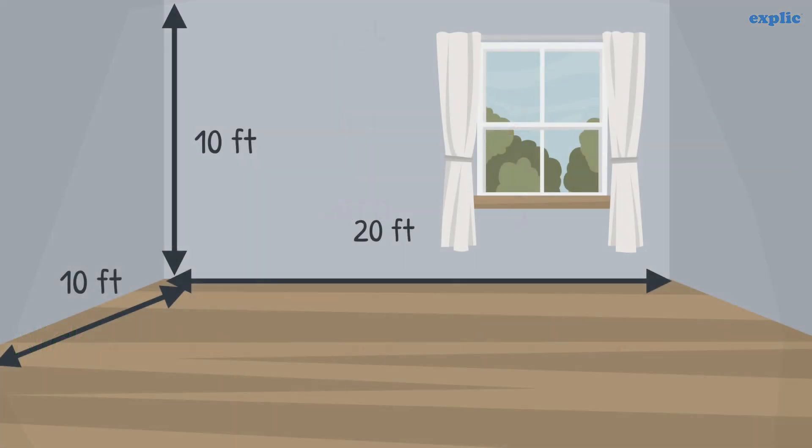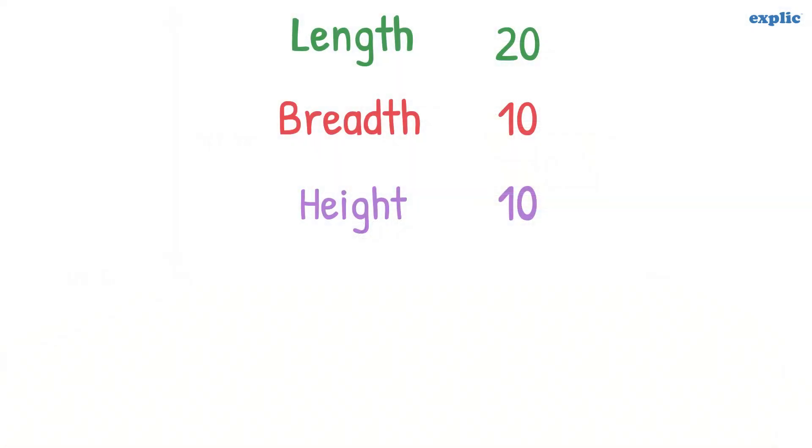Let's take one more example where length, breadth, and height of a room is 20 feet, 10 feet, and 10 feet respectively. We can easily find out that the ratio of length, breadth, and height of the room is 20 is to 10 is to 10.